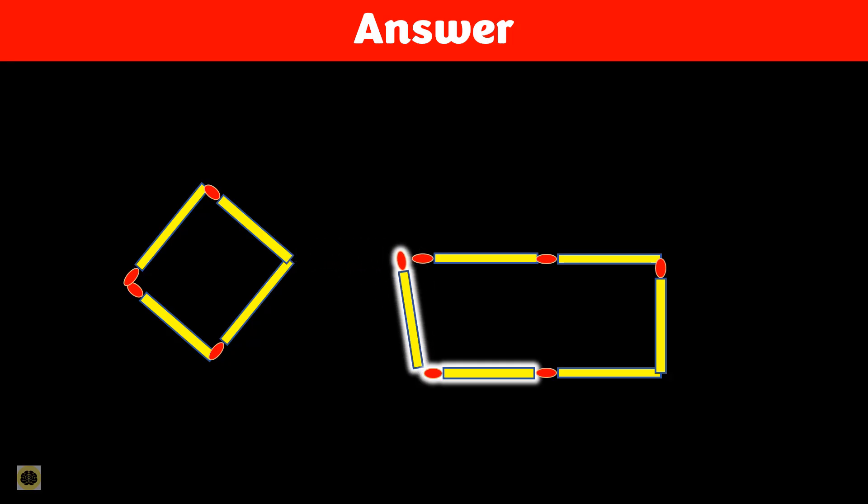Now, for the second move, take the highlighted horizontal matchstick. Rotate it into a vertical position and place it on the left side of the new base just created. This completes the left boundary of the new rectangle.